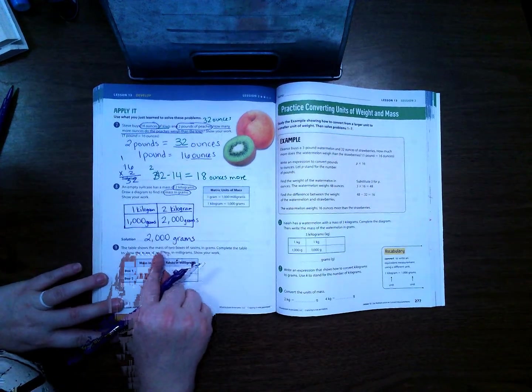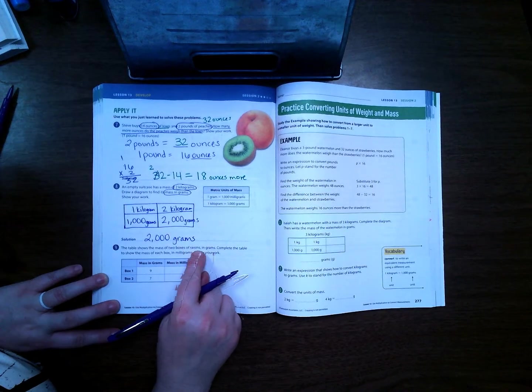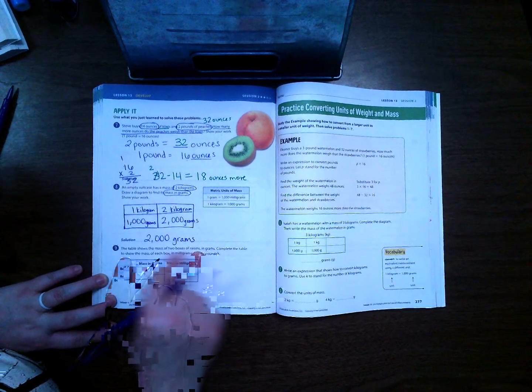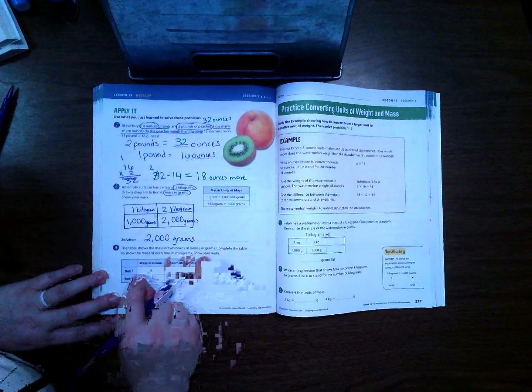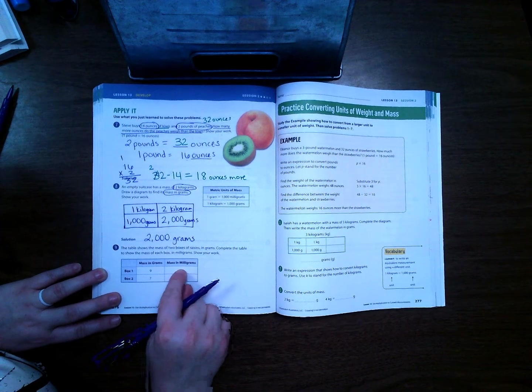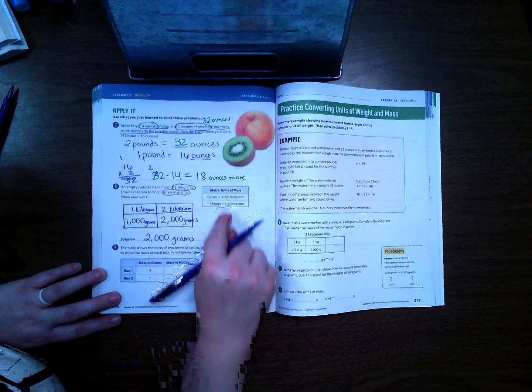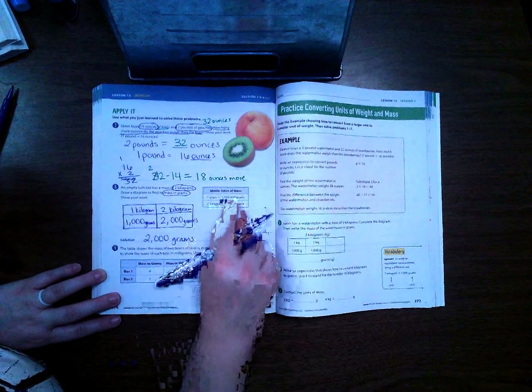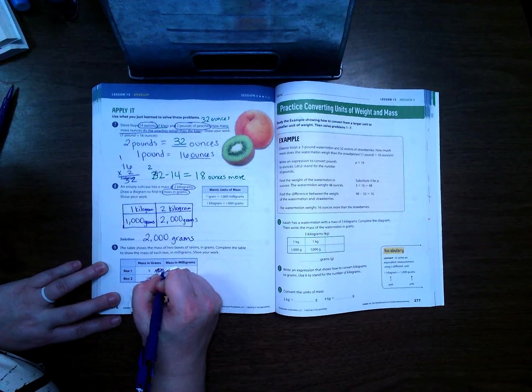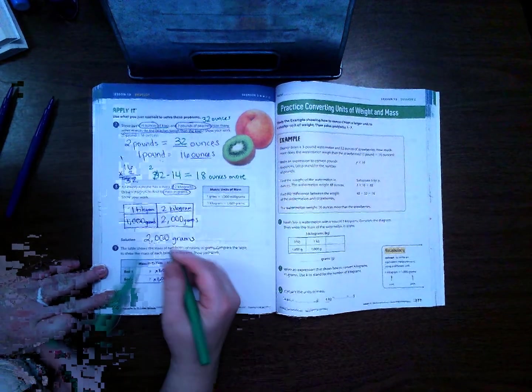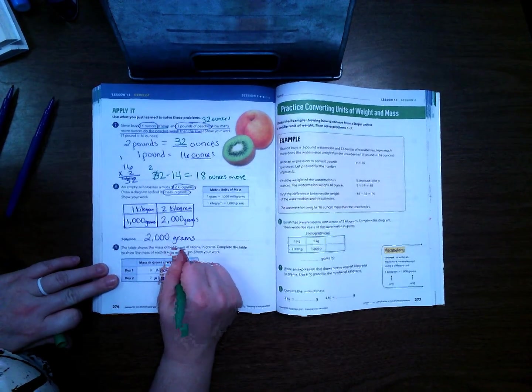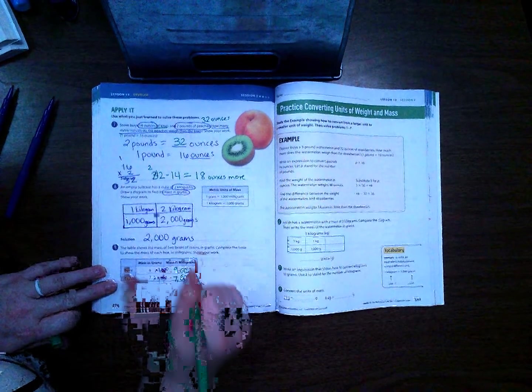The table shows the mass of 2 boxes of raisins in grams. Complete the table to show the mass of each box in milligrams. Box 1 has 9 grams, so how many milligrams? Well we know that each gram is worth 1,000 milligrams. So I can take 1,000 and multiply it by both of these to get my answer. Box 1 weighs 9,000 milligrams and box 2 weighs 7,000 milligrams.